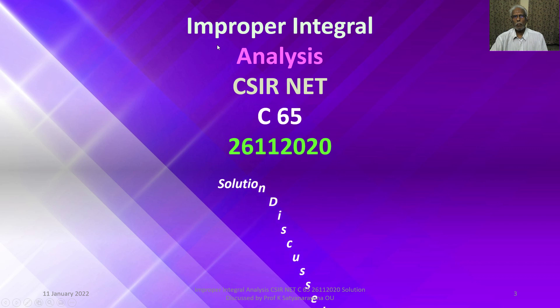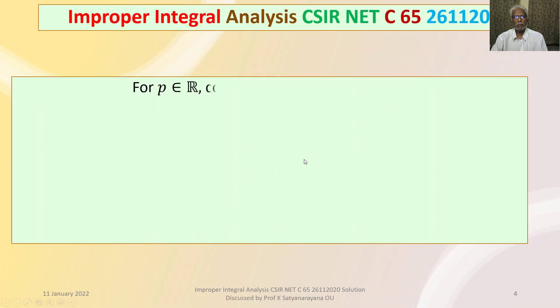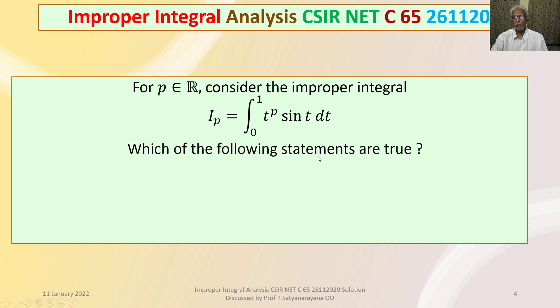We now discuss the solution of a problem from the section analysis that appeared in the National Eligibility Test. The problem is on improper integrals and appeared in the CSIR NET exam held on 26th November 2020. It is from section C and carries 4.75 marks. The problem: for p belonging to the set of real numbers R, consider the improper integral I_p = ∫₀¹ tᵖ sin t dt. Which of the following statements are true?